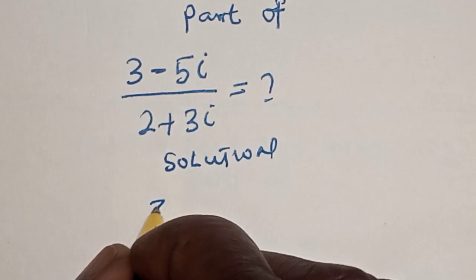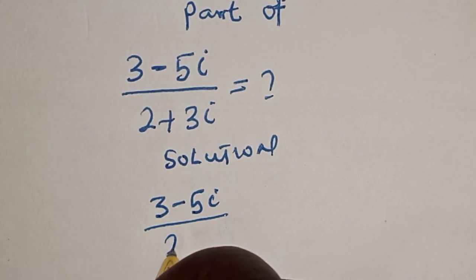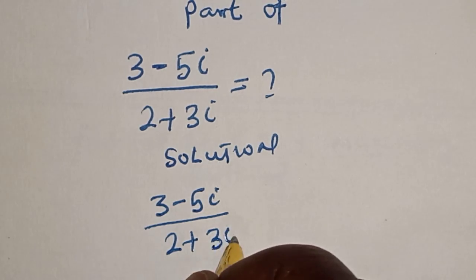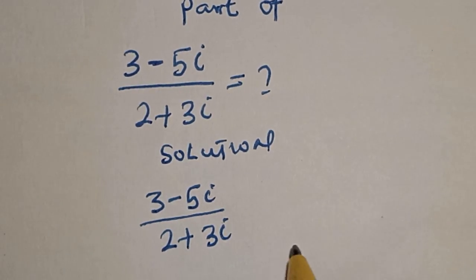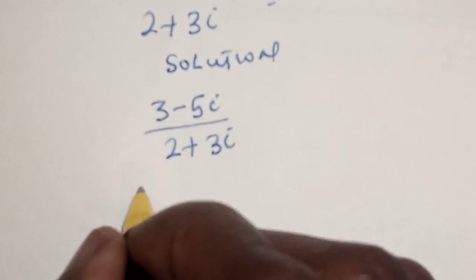We have 3 minus 5i divided by 2 plus 3i. Then, in this case, we are going to make use of a method called rationalization method.